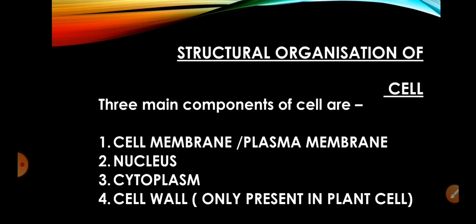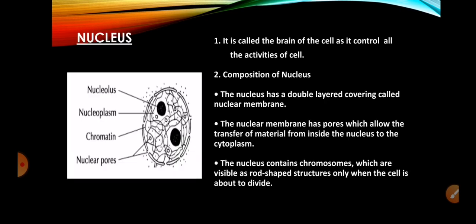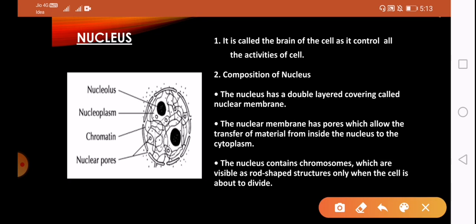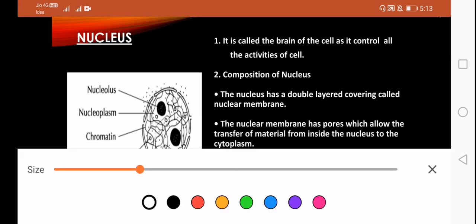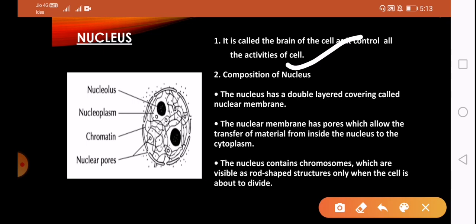Today's topic is nucleus. Nucleus is called the brain of the cell because all the activities conducted inside the cell are controlled by it. That's why it's called the brain of the cell, just like the brain in our body controls all activities.